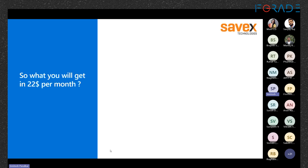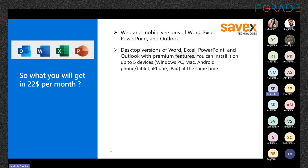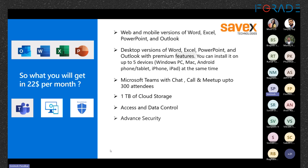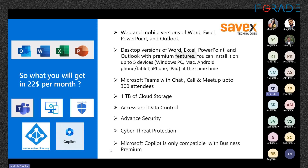For $22 per month you get: web and mobile versions of Word, Excel, and PowerPoint; desktop versions installable on up to 5 devices; Teams with 300 attendees; 1 TB of cloud storage; access and data control; advanced security; cyber threat protection; and Microsoft Copilot compatibility if you wish to purchase it.